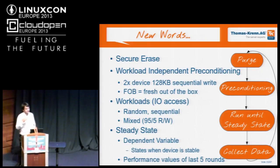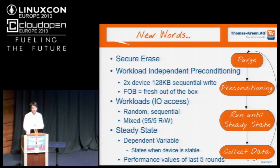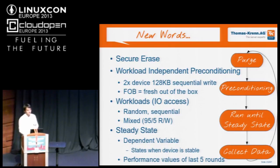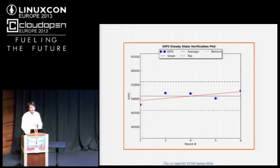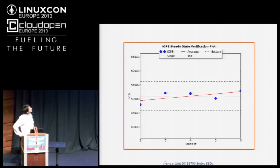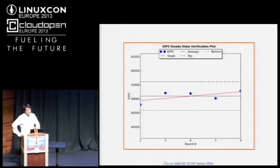We run the workloads as long as necessary, and as soon as the performance is quite stable we declare the steady state reached and collect data to get the most accurate results. The steady state has a dependent variable — that's the point where the state is declared. You can see this on the graph: the blue dots are the actual measurements each round, and the red line shows the slope. When performance results are quite stable, we have reached steady state and can start collecting real measurement data.